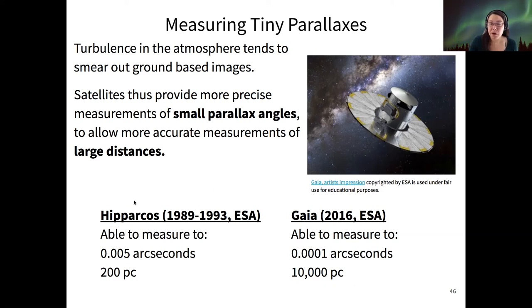Both of these, the Hipparcos and the Gaia satellites, have databases that are public, publicly searchable. And so you can go and find the parallax shifts if they have been measured for lots and lots of different stars. Gaia is an extremely large database.